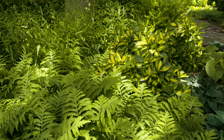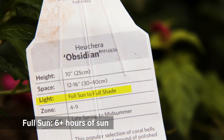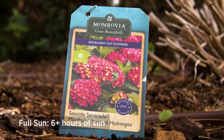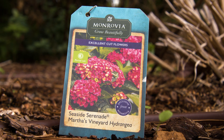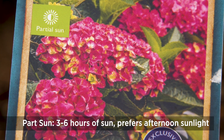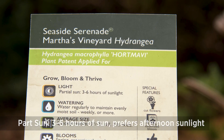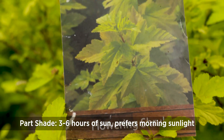Another term you might see on the label is sun requirements or lighting. There are several different types. Full sun, also referenced simply as sun, means your plant needs six or more hours of sunlight to be healthy and thrive. Another term you might see is part sun, which means your plant needs three to six hours of sunlight and it can handle the more intense afternoon sunlight as well.